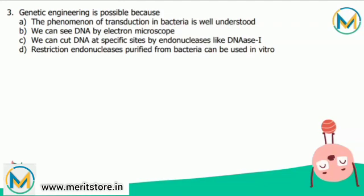These sequences are palindromic sequences. Different restriction enzymes present in different bacteria can recognize different or the same restriction site, but they will cut at two different points within the restriction site. No two restriction enzymes from a single bacterium will cut at the same restriction site. The correct answer is option D — restriction endonucleases purified from bacteria can be used in vitro.